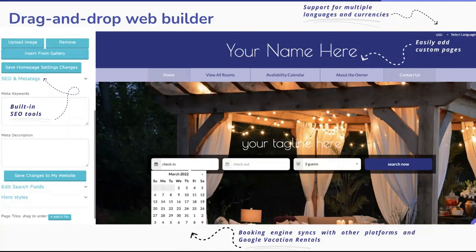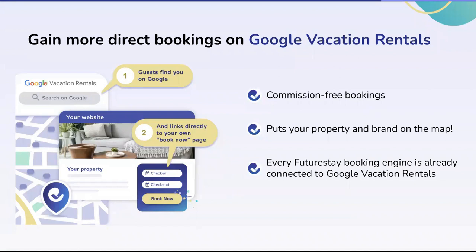Another way to optimize your booking strategy is to be on Google Vacation Rentals — another channel to reach more travelers with commission-free bookings. It essentially puts your property and your brand on the map. Every FutureStay booking engine and dashboard is already connected to Google, which is a huge benefit. We're one of the only rental software companies that can help independent smaller managers get their properties onto Google Vacation Rentals — otherwise you'd need to be part of a larger property management company. We enable it so that any property owner with even just one property can get listed on Google.